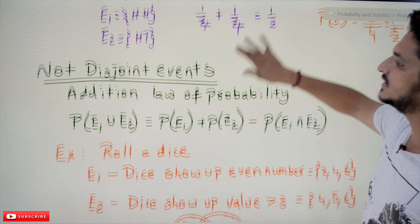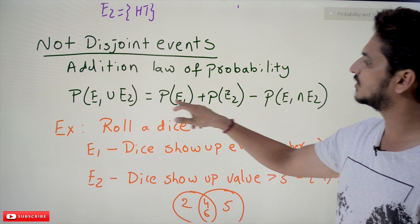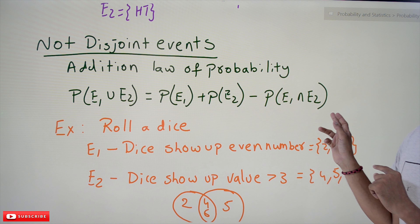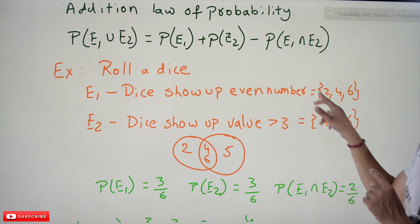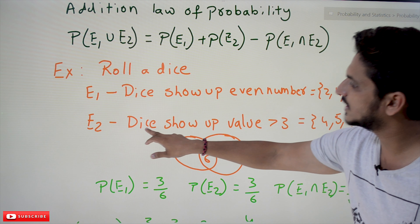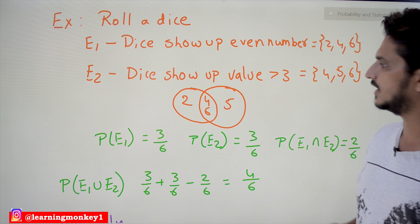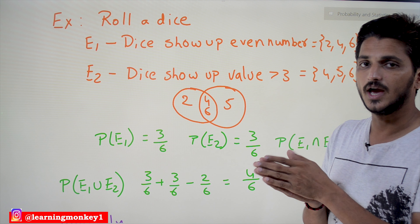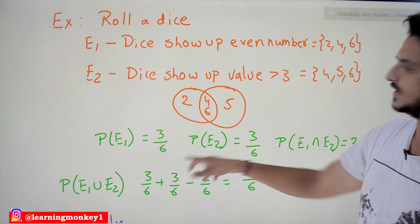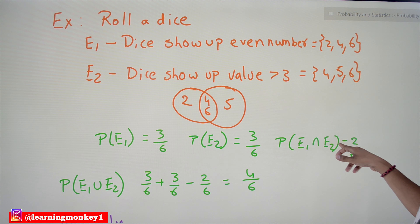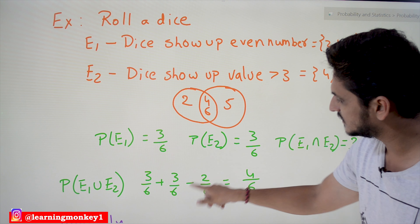If events are not disjoint, we use the additional law of probability: P(E1 ∪ E2) = P(E1) + P(E2) − P(E1 ∩ E2). Example: roll a dice. E1 is the event the die shows an even number: {2, 4, 6}. E2 is the event the die shows a value greater than 3: {4, 5, 6}. P(E1) = 3/6, P(E2) = 3/6, P(E1 ∩ E2) = 2/6 (common elements 4 and 6). So P(E1 ∪ E2) = 3/6 + 3/6 − 2/6 = 4/6.